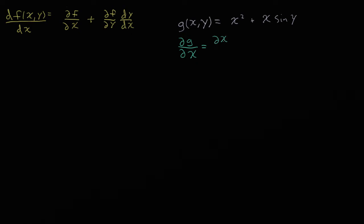So the partial derivative of x squared with respect to x — and we add the other term, the partial derivative of x times sine y with respect to x. Now let's simplify these terms. The first term is pretty easy: it's just the derivative of x squared, which is 2x. We don't really have to pay attention to the fact that it's a partial derivative because it's only a function of x.